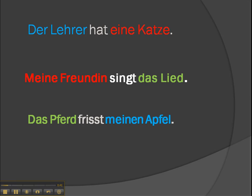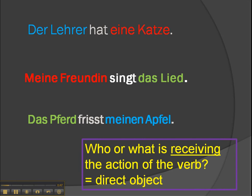The first one: 'Der Lehrer hat eine Katze' — the teacher has a cat. We need to find who or what is receiving the action of the verb to find the direct object. Let's find our verb first: 'hat' is our verb. Who or what is doing the having? 'Der Lehrer' — so he's the subject. What does he have? What is receiving the action of the verb? 'Eine Katze.' So the cat is the direct object.